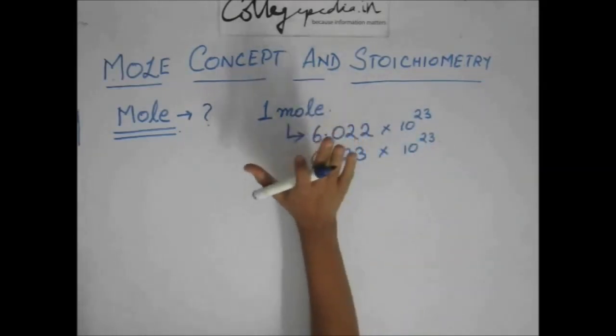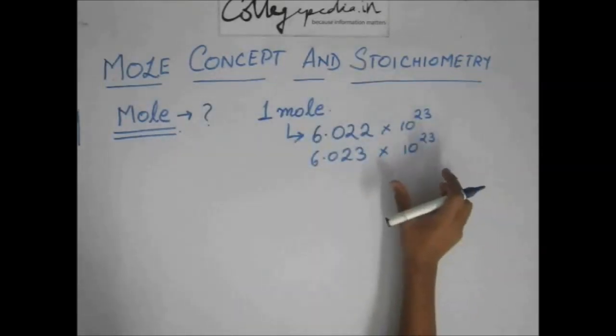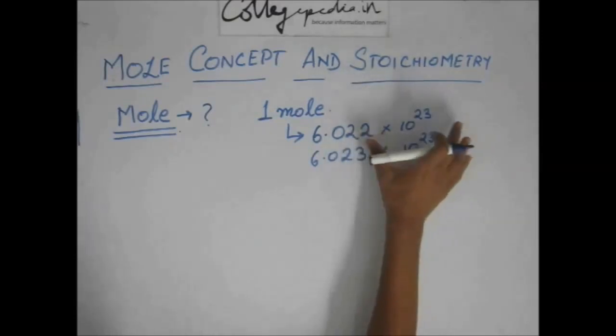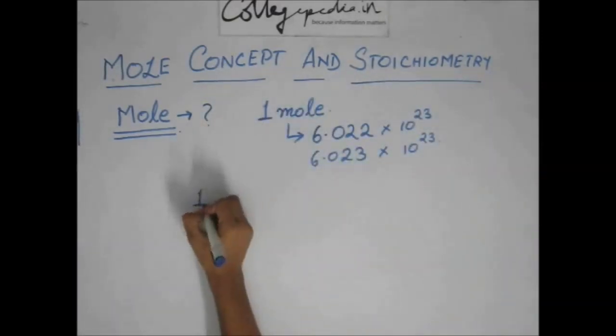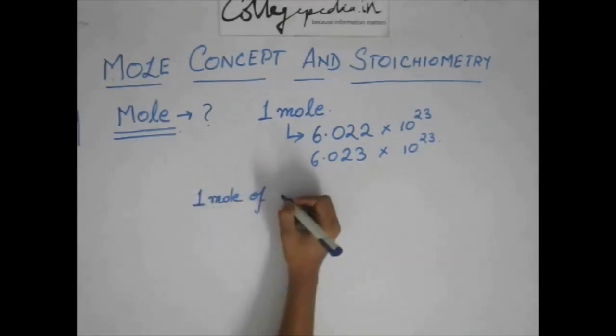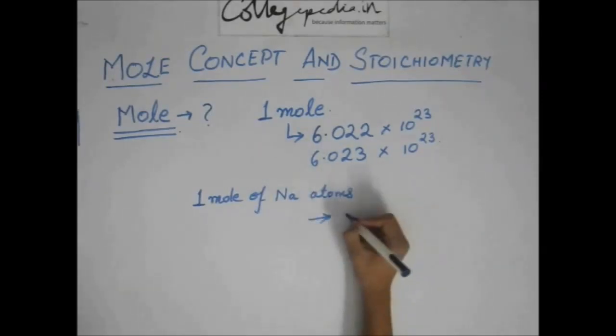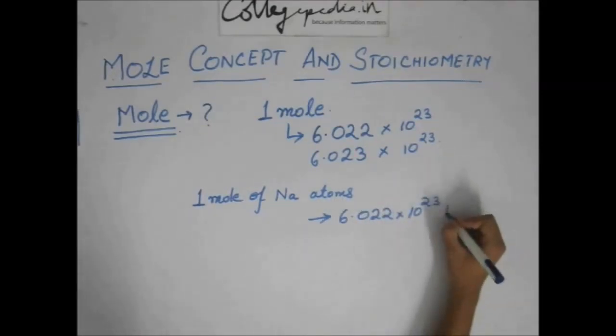So, one mole means only this much. One mole of different things means 6.022 times 10 to the 23 of that thing. This many particles of that thing. So, if you say we have one mole of, suppose, sodium atoms, it means we have 6.022 into 10 to the power 23 sodium atoms.